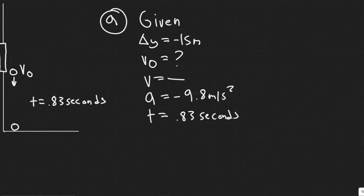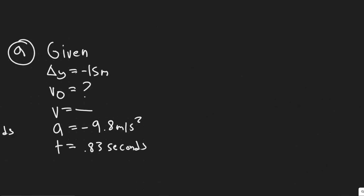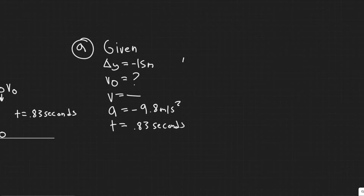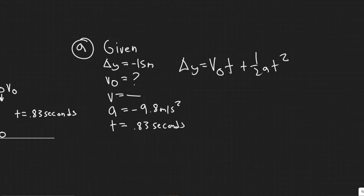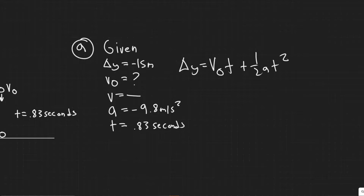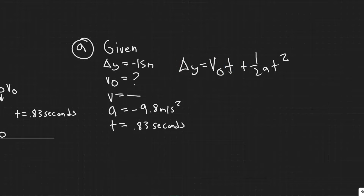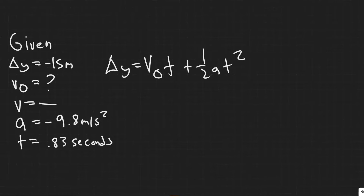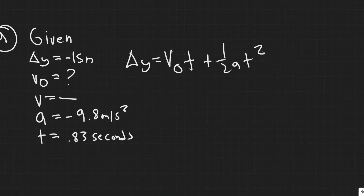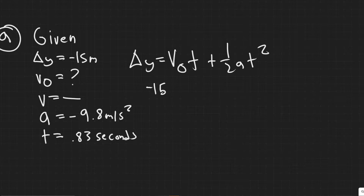With three known variables, we pick the appropriate kinematic equation. The one we'll use is: Δy = v₀t + ½at². We choose this because we know delta y, t, and a, and we're solving for v₀. This is probably the most common kinematic equation, so you should have it memorized — but you can look it up if needed.